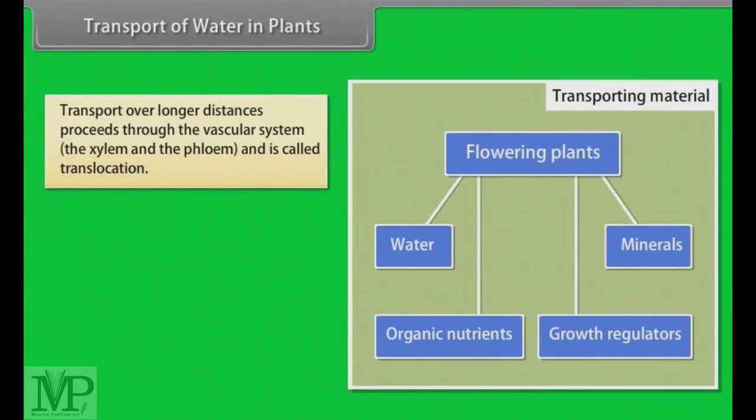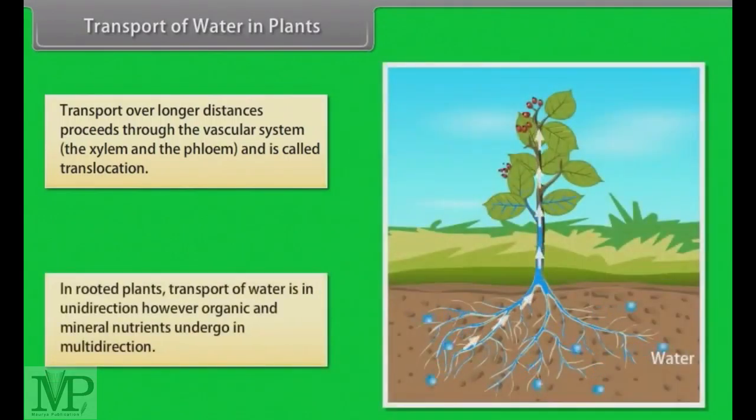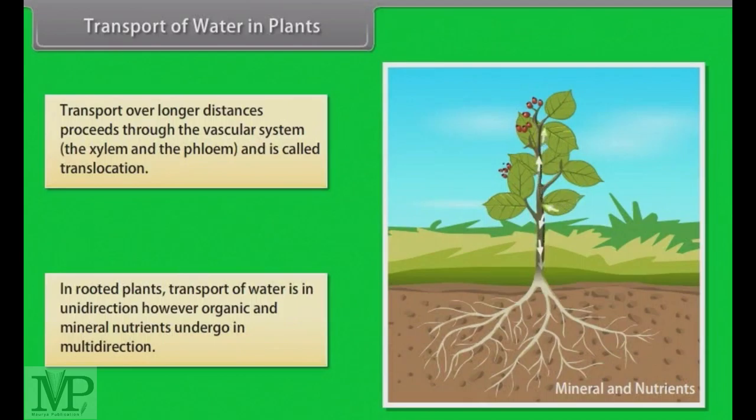You will be surprised to know that in rooted plants, transport in xylem is essentially unidirectional from roots to the stems. Organic and mineral nutrients, however, undergo multidirectional transport. Now we will learn about the means of transport for short distances in plants.